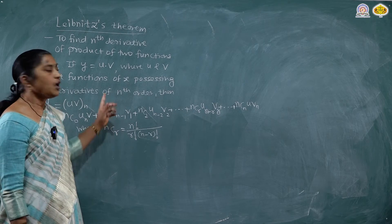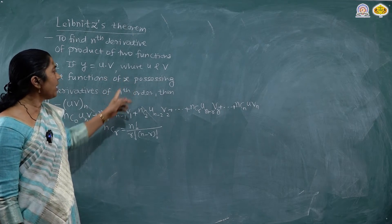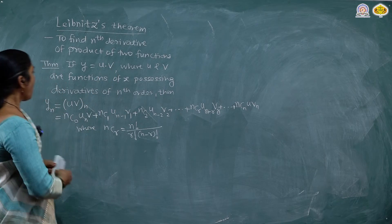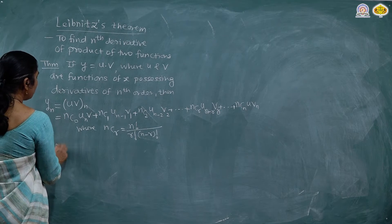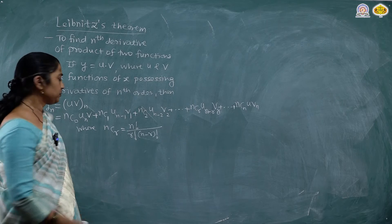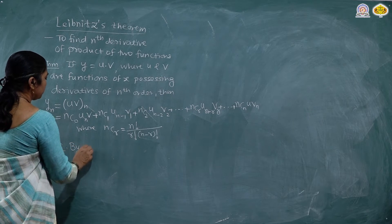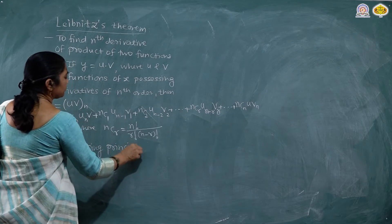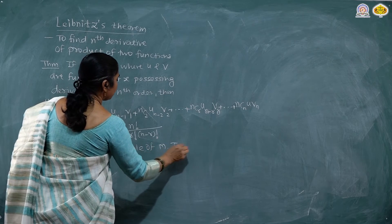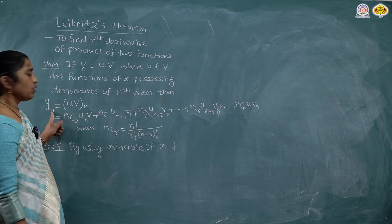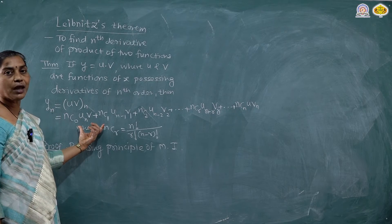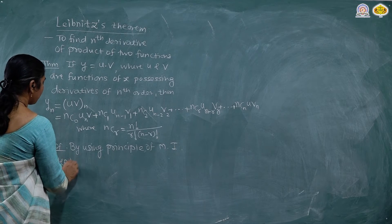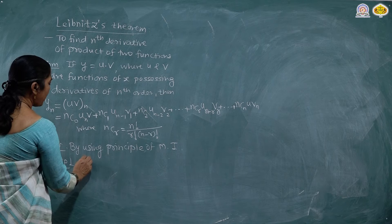This is the statement of Leibniz theorem. It is used to find the nth derivative of the product of two functions u and v. To prove this, we are going to use the principle of mathematical induction. We want to prove that the nth derivative of y is given by this formula. The first step is to prove this result for n equal to 1.